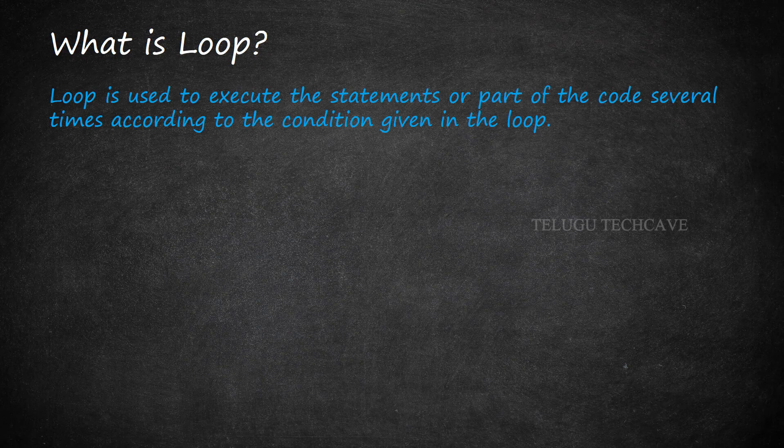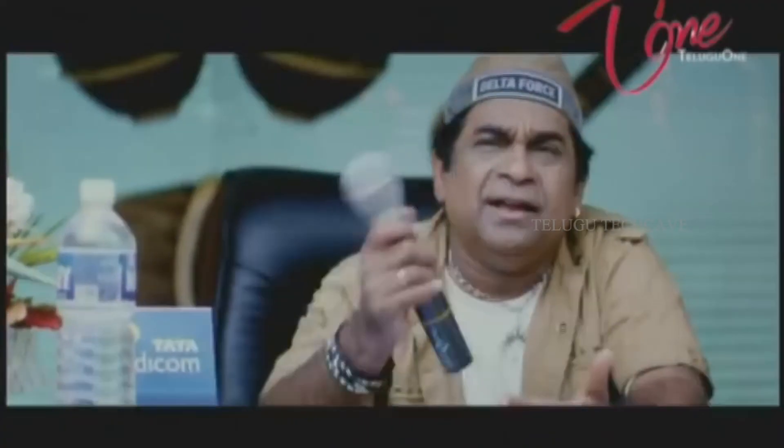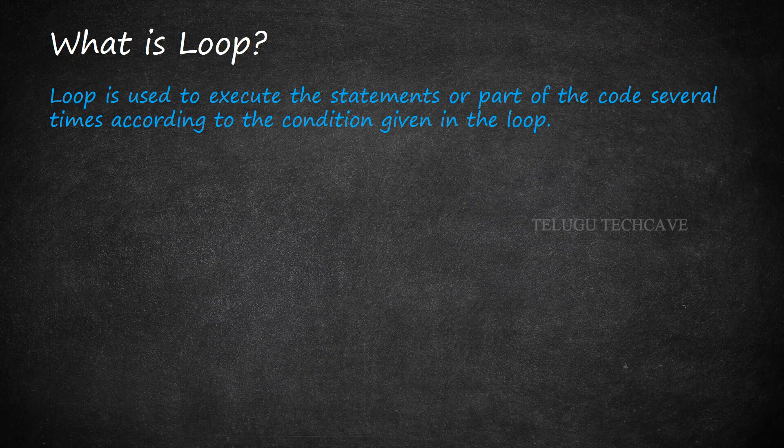First, what is the loop? A loop is used to execute statements or part of code several times according to the condition given in the loop. In this condition, we use the number of times to execute the statements or the code.